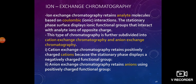The ions are eluted one after the other; such phenomena is called ion exchange chromatography. The principle involved: ion exchange chromatography retains analyte molecules based on coulombic interactions — very weak ionic interactions. The stationary phase surface displays ionic functional groups that interact with analyte ions of opposite charge. This type of chromatography is further subdivided into cation exchange chromatography, which retains positively charged cations because the stationary phase displays a negatively charged functional group, and anion exchange chromatography, which retains anions using a positively charged functional group.